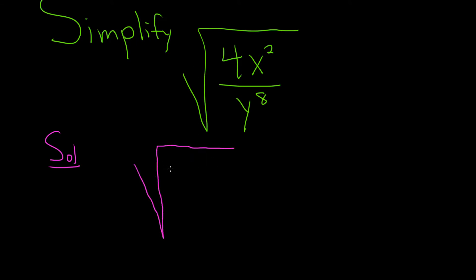So 4 is 2 squared. X is already being squared. And the trick is we can write y to the 8th as y to the 4th squared. And 2 times 4 is 8, so it certainly checks.